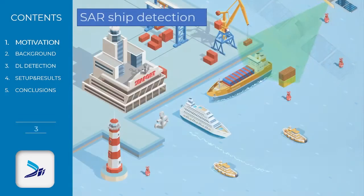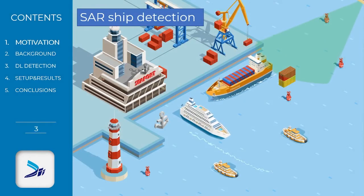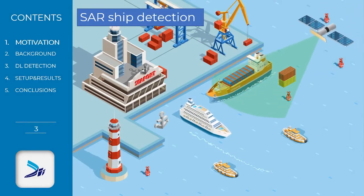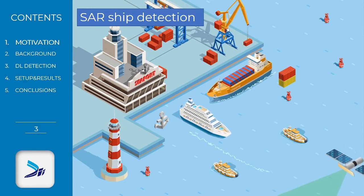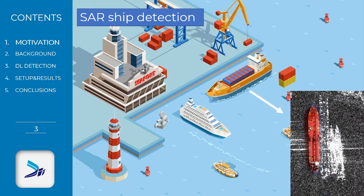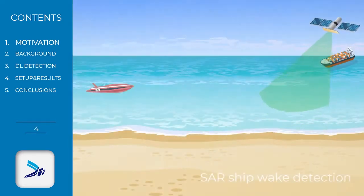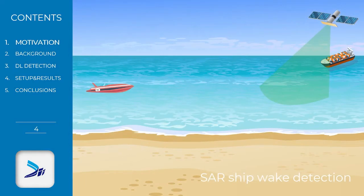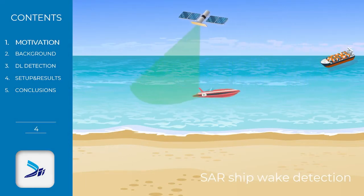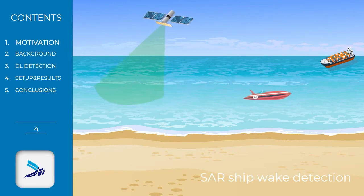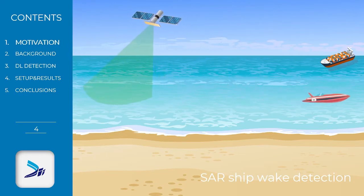Usually, ships are identified by their backscattered energy, which appears in a SAR image like a cluster of white pixels. This methodology is called SAR ship detection. However, it's not the only one possible. Moving ships leave behind long trails, which can extend for kilometers. Ship wakes can be used as a marker of a ship's presence and for route estimation purposes.